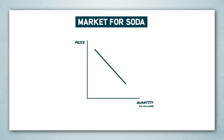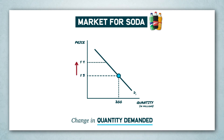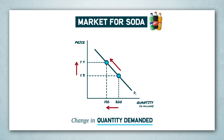First, let's recall a change in the quantity demanded. Suppose the price on sugary fizzy drinks goes from $3 to $4. What happens? Well, the quantity demanded decreases from 200 to 150. There's a decrease in the quantity demanded marked by movement along the demand curve, but there's no change in the existing demand curve.